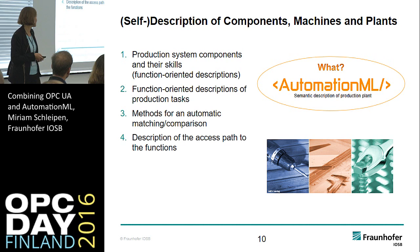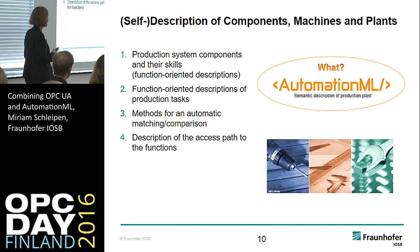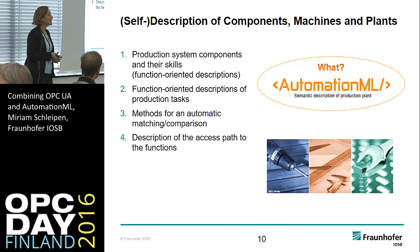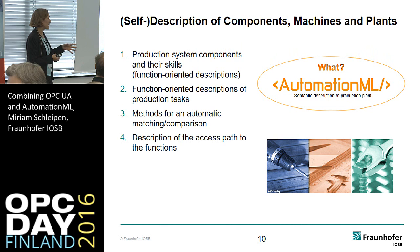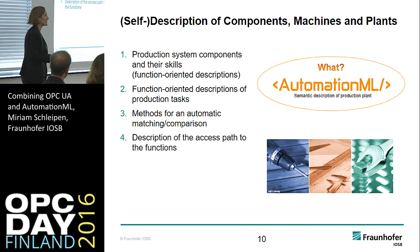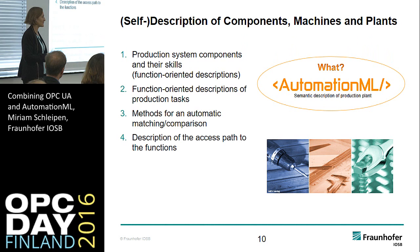AutomationML combined with OPC UA also provides the possibility to describe the XPath to the function. If there is a transport process which can be triggered from point A to point B, you can initiate this process by creating an OPC UA method for that component — with parameters that have restrictions — and AutomationML is the possibility to describe this.